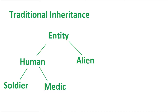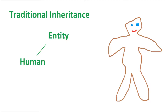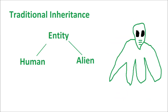On the screen is the traditional inheritance structure. Let's step through this. At the top of the tree, we have our base entity class. As you can see from the picture, there's not much to an entity, but it's a collection of the functionality needed by all of our characters. Inheriting from the entity class, we have a human class. The human class further defines the entity into something recognizably human, and has all of the functionality common to all humans. Also inheriting from the entity class is an alien class, which encompasses a different set of functionality common to all aliens.